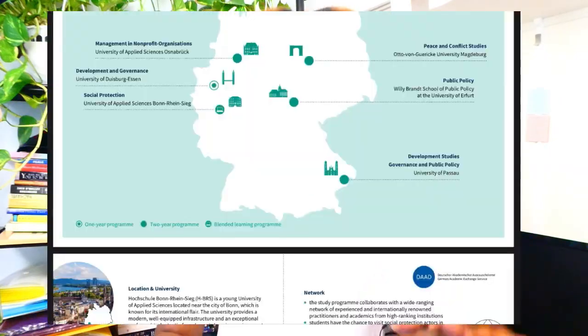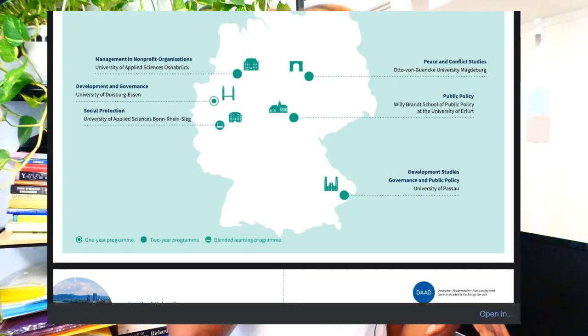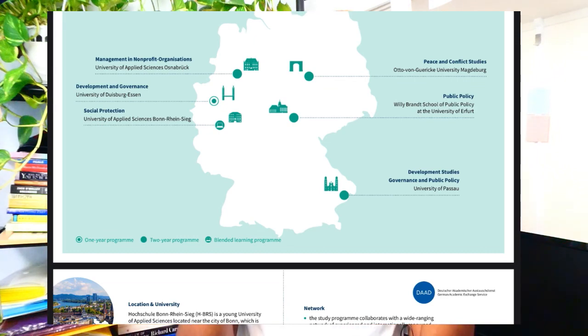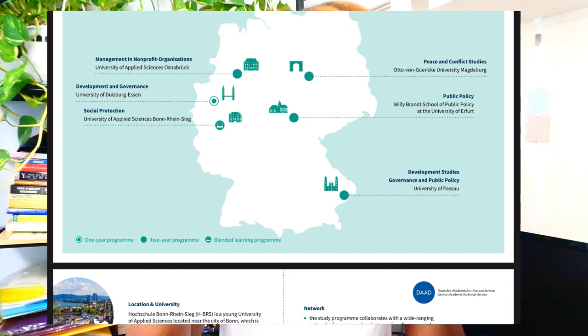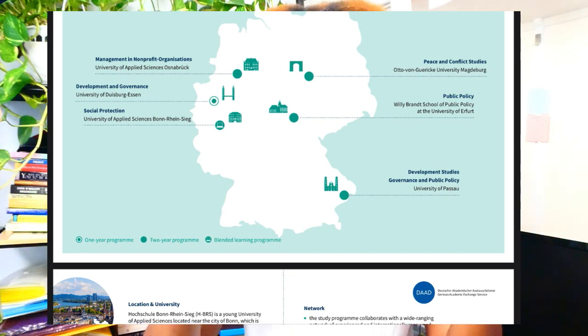Once you've determined that, the other thing to know about this scholarship is that it has seven different programs with different partner universities. Here I'm going to show you — this is the map of Germany — and it shows you where each of these universities is located and which program is offered there.